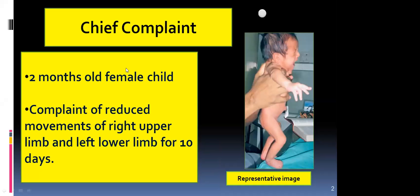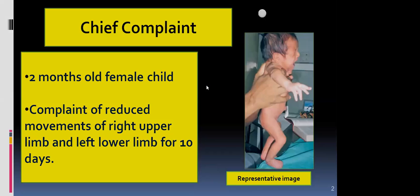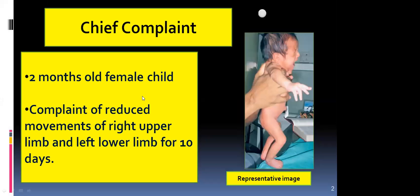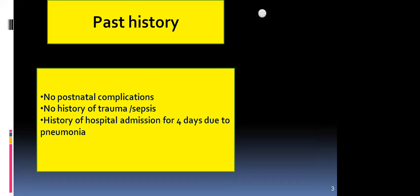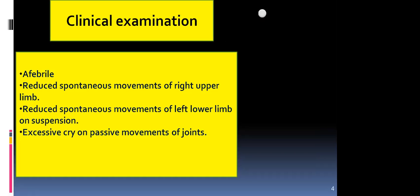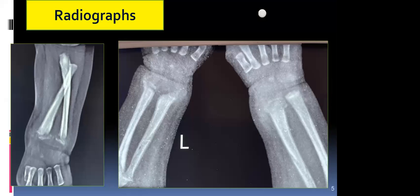This two-month-old female child came to us with a complaint of reduced movements of the right upper limb and left lower leg for 10 days. There was no postnatal complications, no history of trauma. There was a hospital admission for four days due to pneumonia 10 days back. On clinical examination, the patient was afebrile with reduced movements of the right upper limb and left lower limb, and there was a festive cry on passive movements of joints.